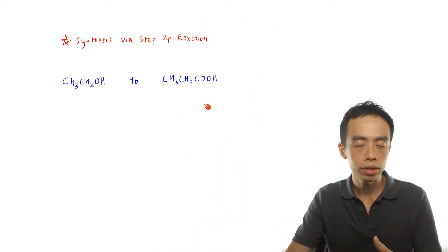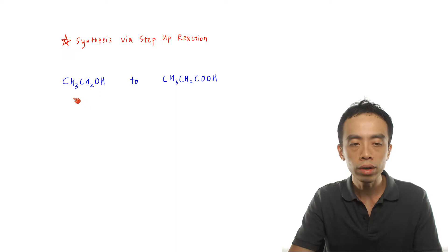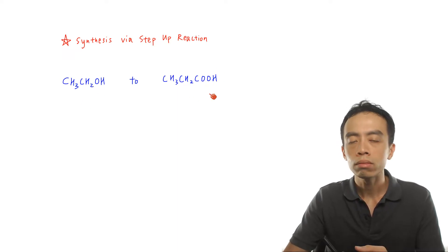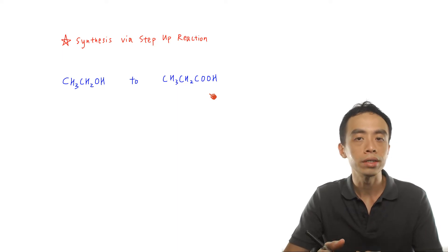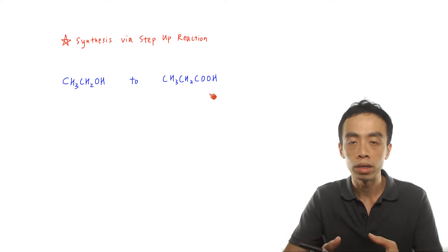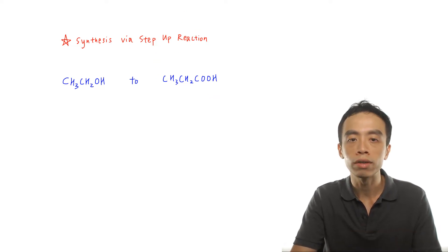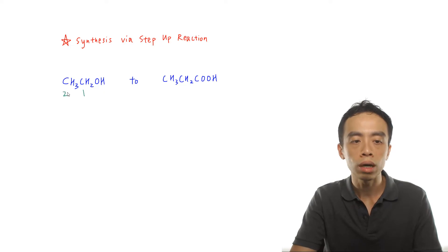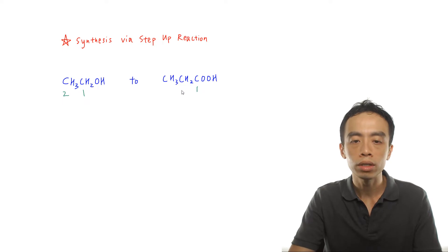So we have our example here. We want to convert a 2-carbon alcohol, ethanol, to a 3-carbon acid, propanoic acid. Now if you're given synthesis questions, usually the first thing we look out for is whether there is any change in the number of carbon. So if I count the carbon for the starting material, I have 1 carbon, 2 carbon. And if I look at the product, I have 1 carbon, 2 carbon, and 3 carbon.